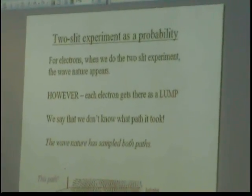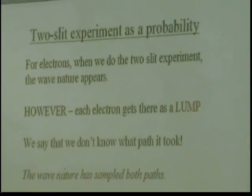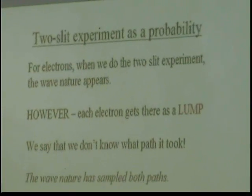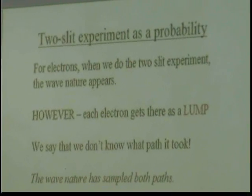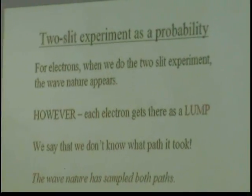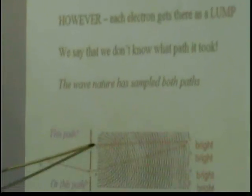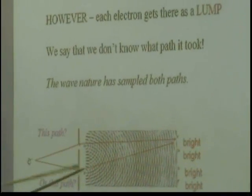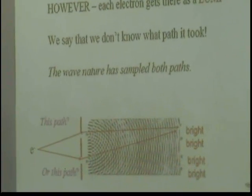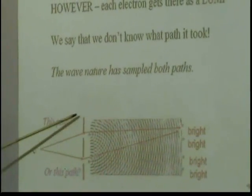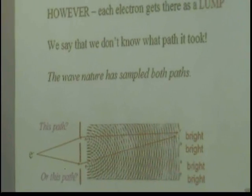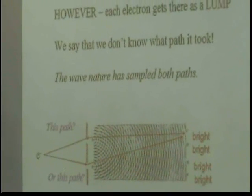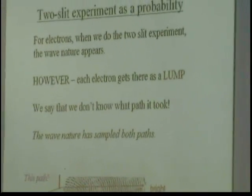For electrons when we do the two-slit experiment, the wave nature appears. However, each electron gets there as a lump. It doesn't travel like a lump, but it gets there as a lump. We say we don't know what path it takes. The wave nature means that this thing has sampled both paths. So you get an electron here, you say, did it come this way through this hole, or did it come through this hole? Well, we say it goes through both holes. The electron is a wave at this point. It's going through both holes at the same time. You have to do that in order to reproduce the pattern of bright and dark that you see at the end. This should really be messing with your head at this point. You guys should be pretty uncomfortable.